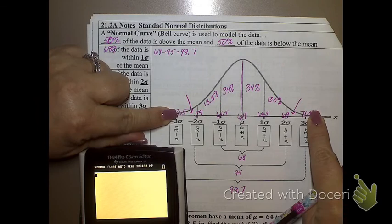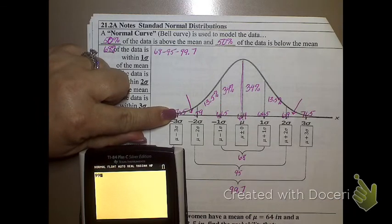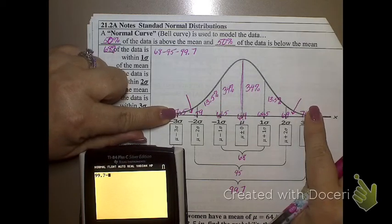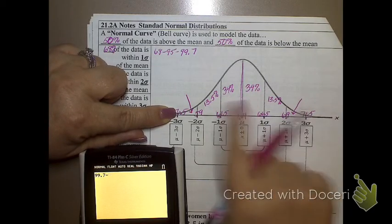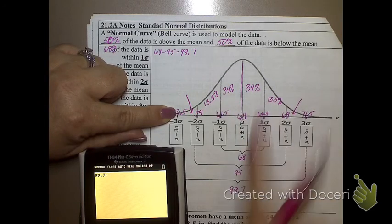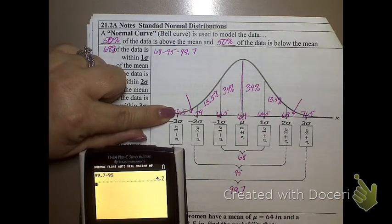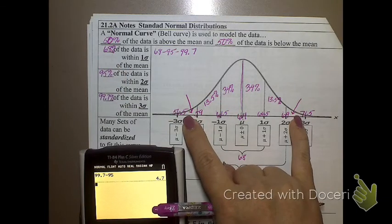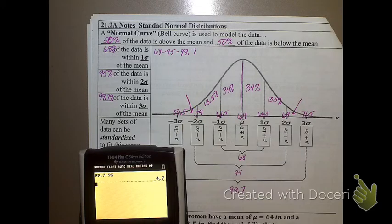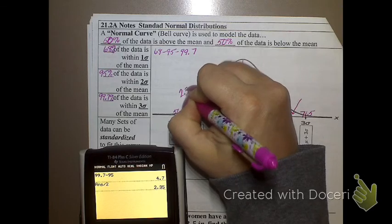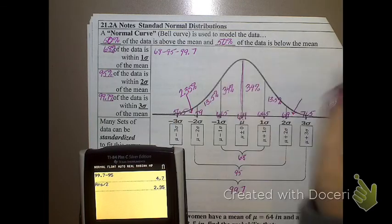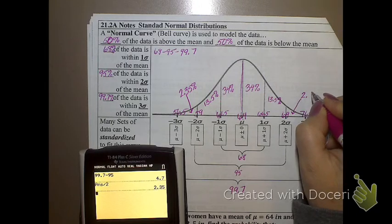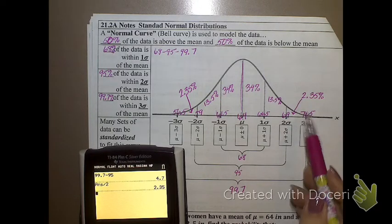So, how do I find this? Well, if this whole thing is 99.7%, what am I going to subtract? What I already know, right? And I know that this is 68, and I know that all of these together is 95, right? Or I can subtract them individually. So, I have 4.7% that needs to be split up to those two sections. So, if I divide that by two, what do I get? 2.35% for each of those. Does that make sense how I got that 2.35%?